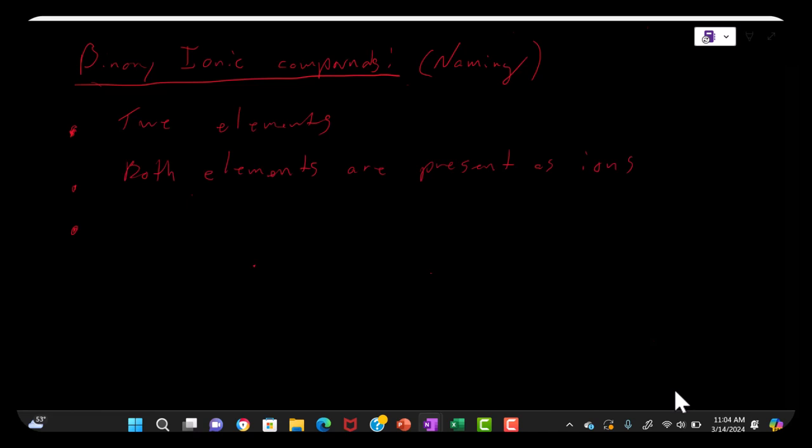To name the ionic compound, we first name the metal that the cation was formed from. So an example would be sodium chloride. The sodium ion came from the metal sodium, so the first part of the name would be sodium.